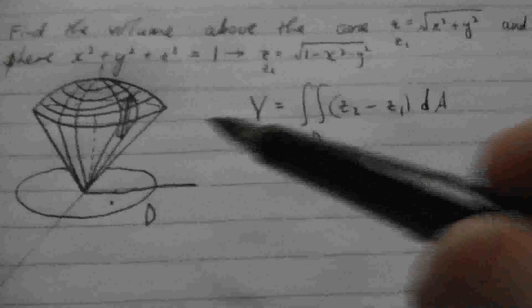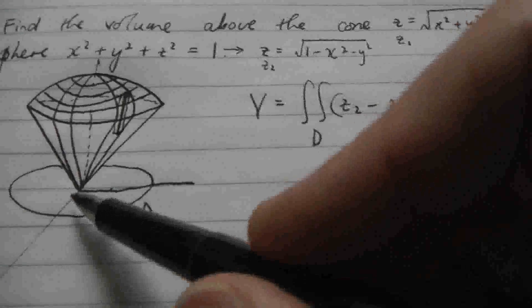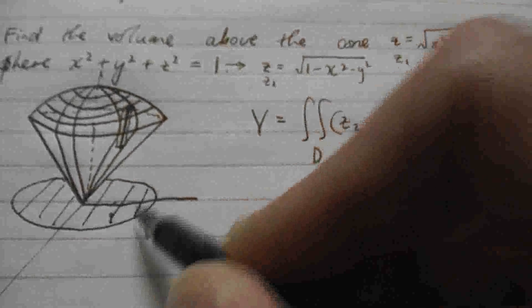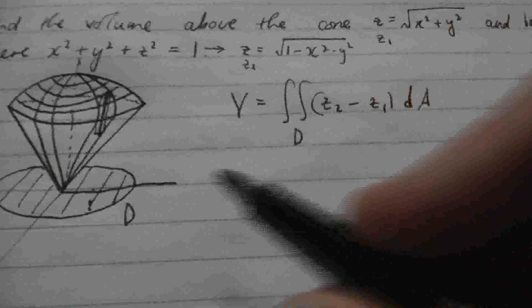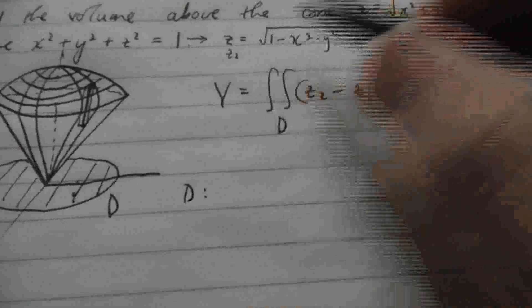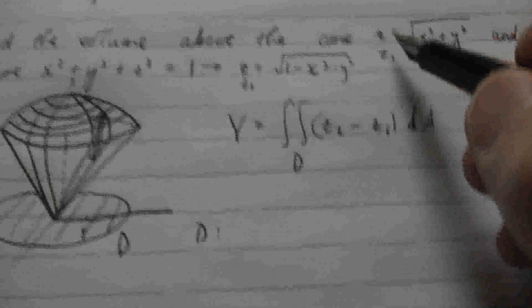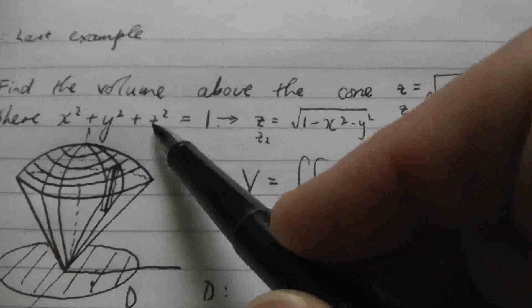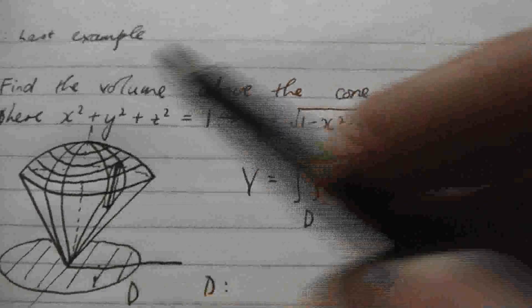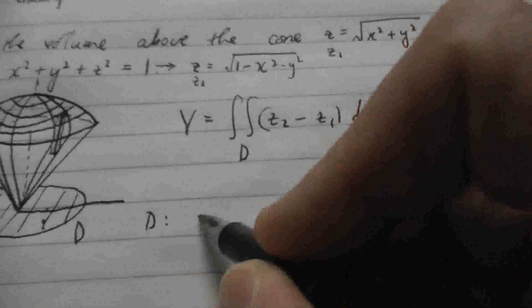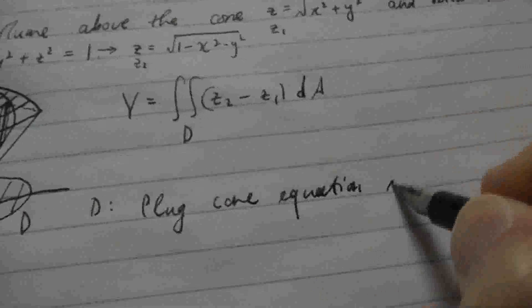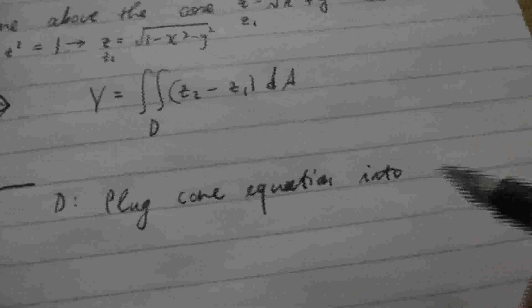So let's work this out. The first thing we actually need to know is what is the equation of this intersection curve. So d is the region enclosed by the circle, right? We need to know what the boundary is. So d is where these two things are equal. What we could do is to plug the equation of the cone into the equation of the sphere. There will be squaring out the square root, so that should give us a nice, easy equation to work with. So let's plug the cone equation into the sphere equation.